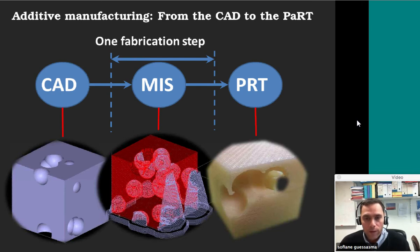So basically, there is only one single step between the digitalized model — here is the CAD model; CAD stands for computer-aided design — and this CAD model is transferred into the set of machine instructions before printing the part. So that's basically one fabrication step.